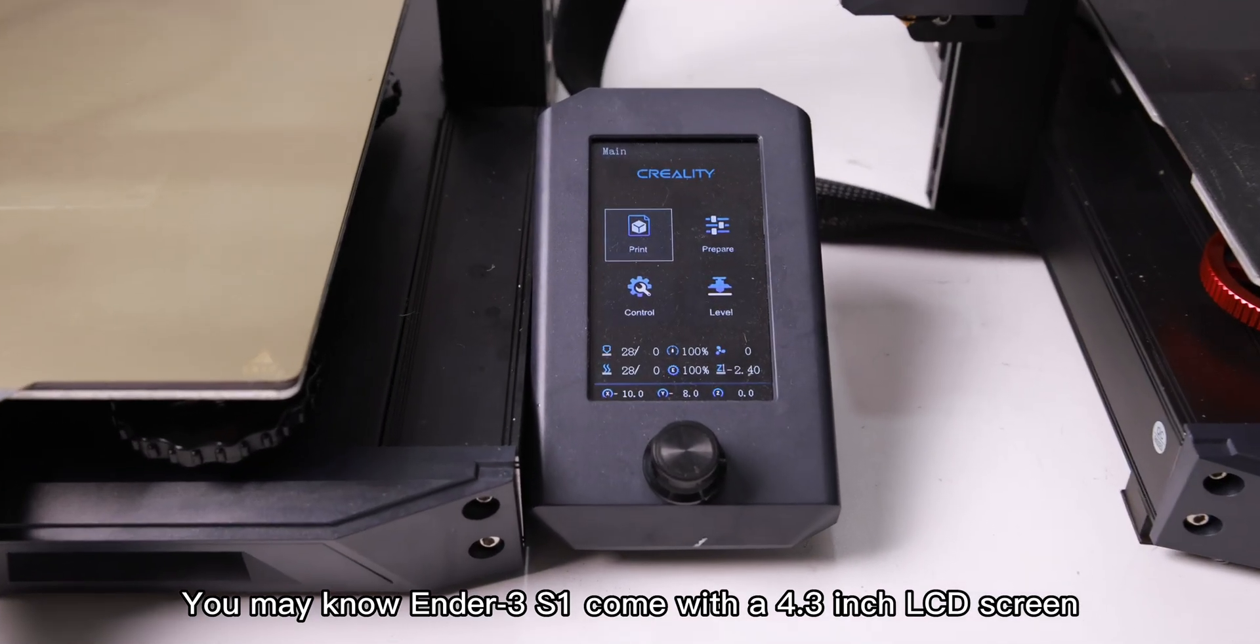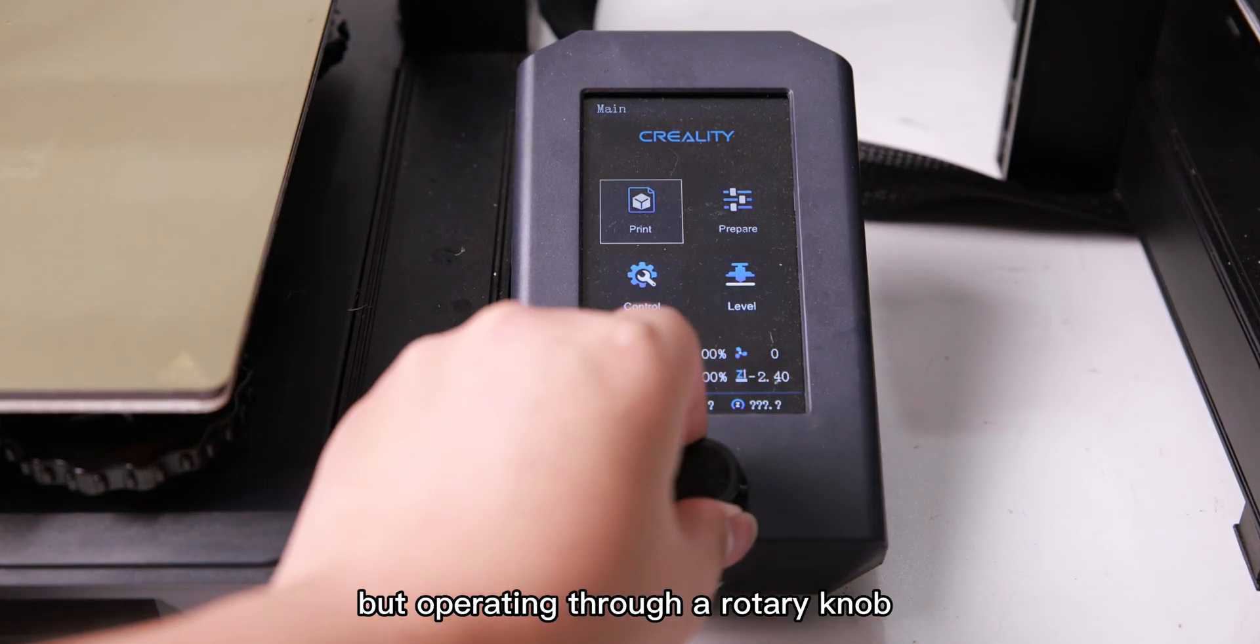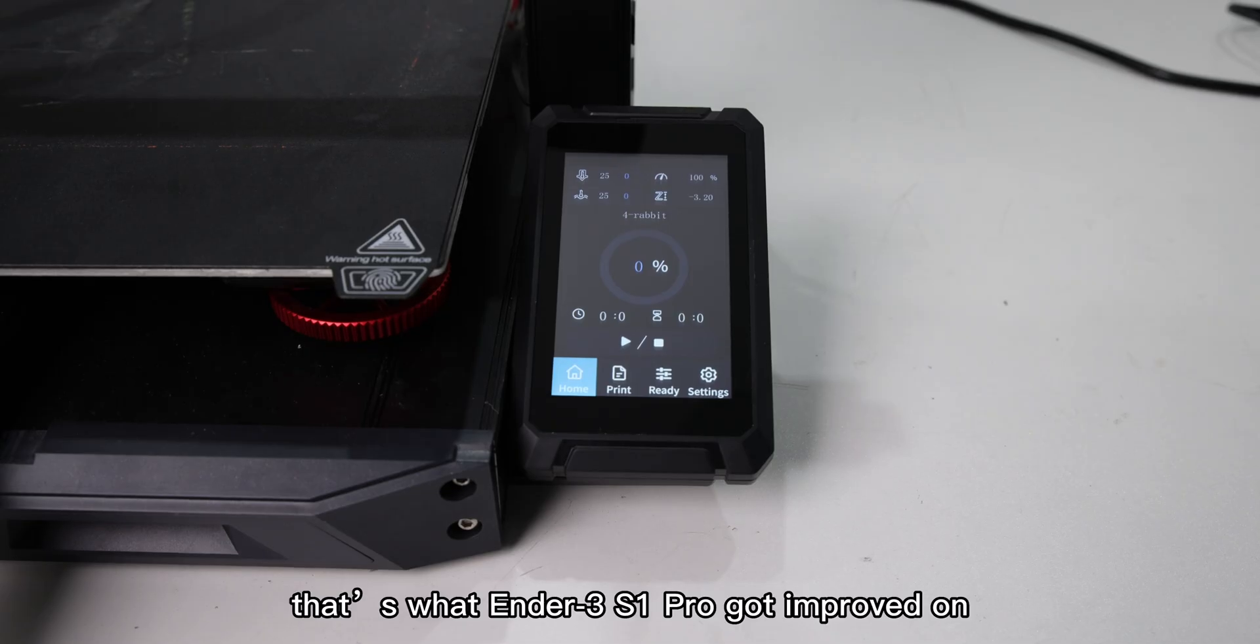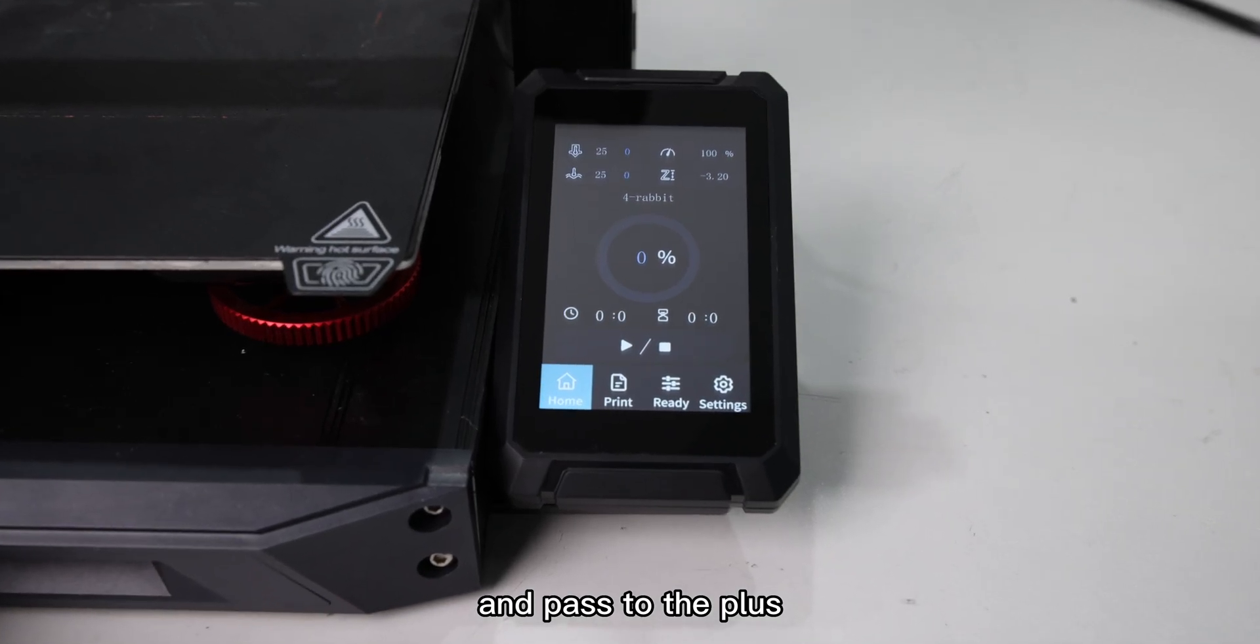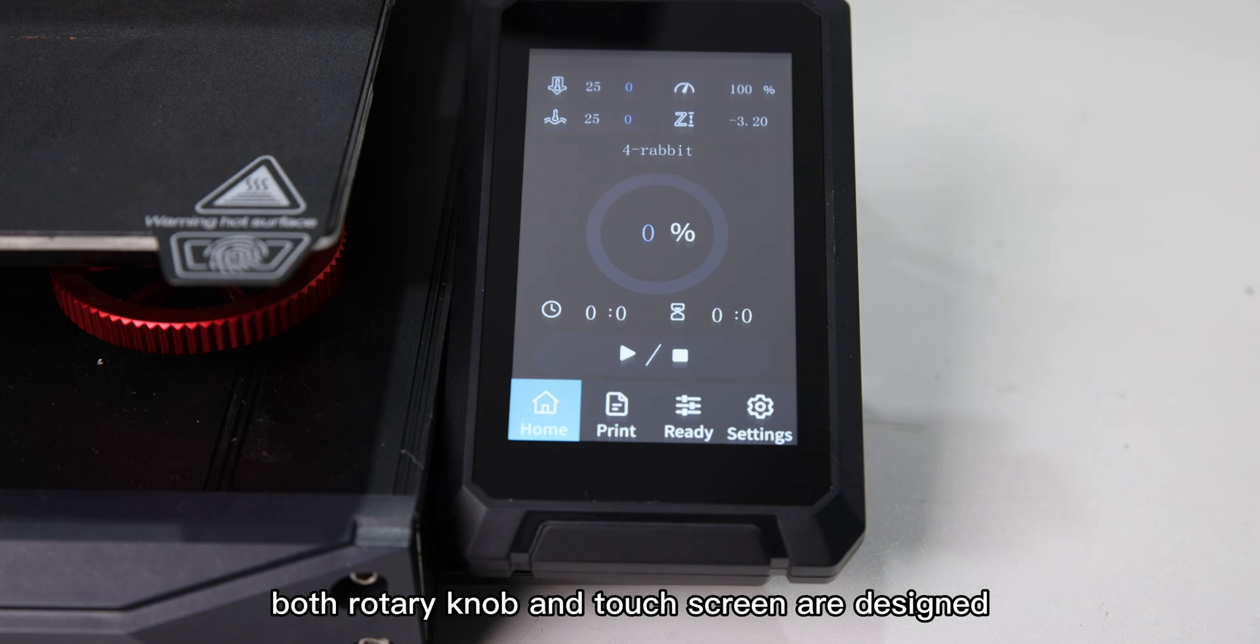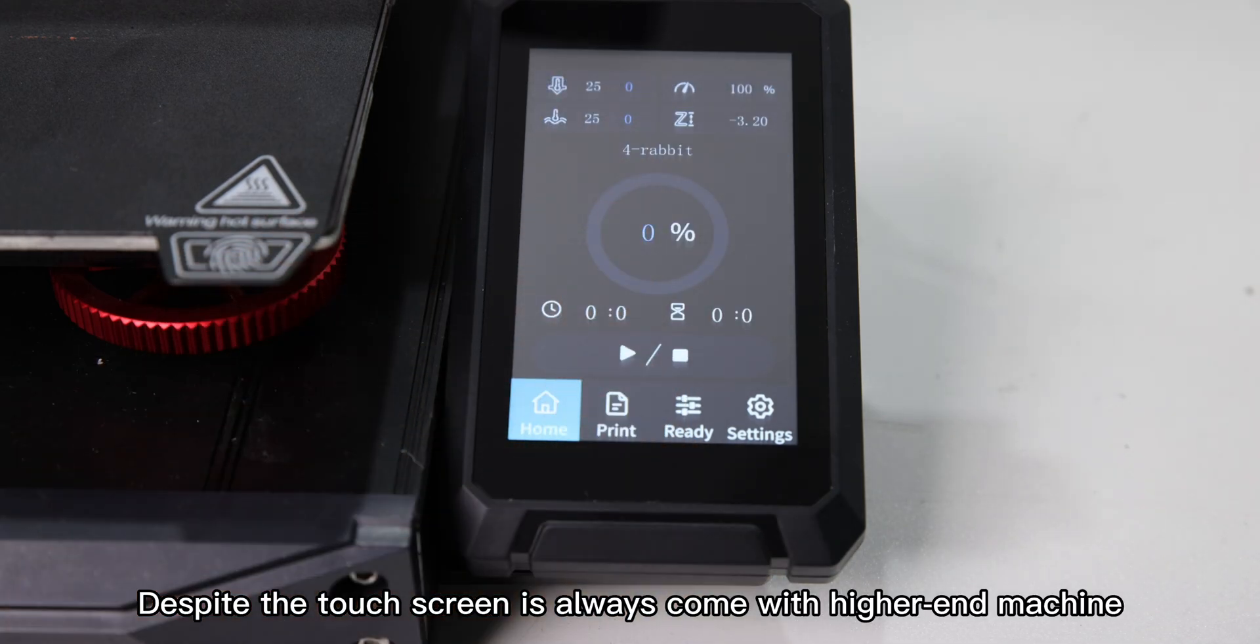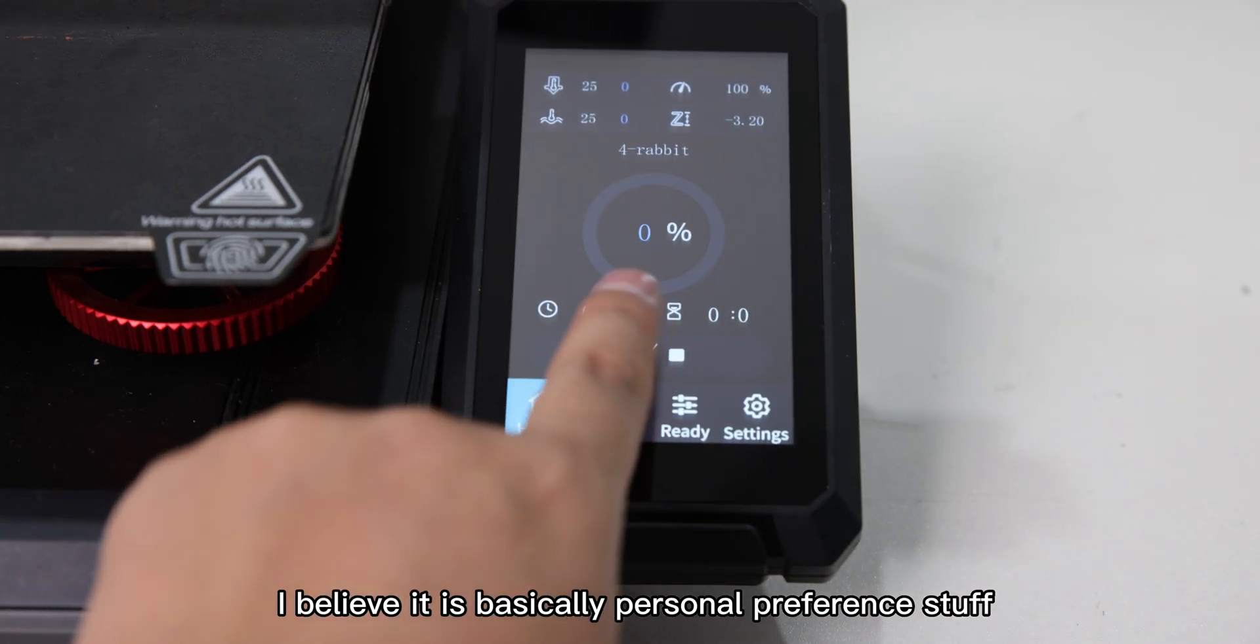You may know Ender 3 S1 comes with a 4.3-inch LCD screen but operates through a rotary knob. And that's what Ender 3 S1 Pro got improved on and passed to the Plus. Based on my using experience, both rotary knob and touch screen are designed to be convenient to operate. Despite the touch screen always coming with higher-end machines, I believe it is basically personal preference.